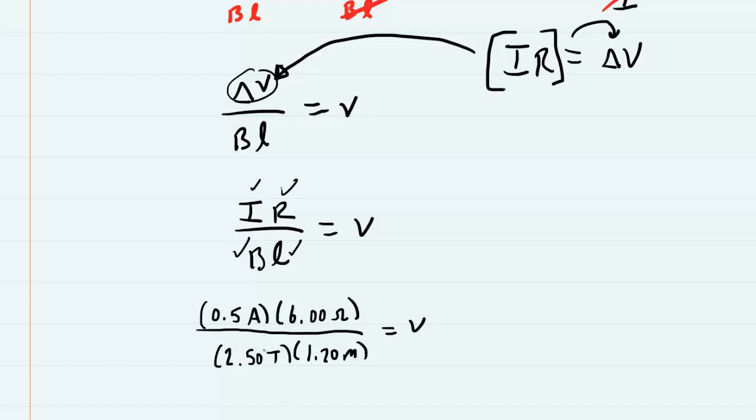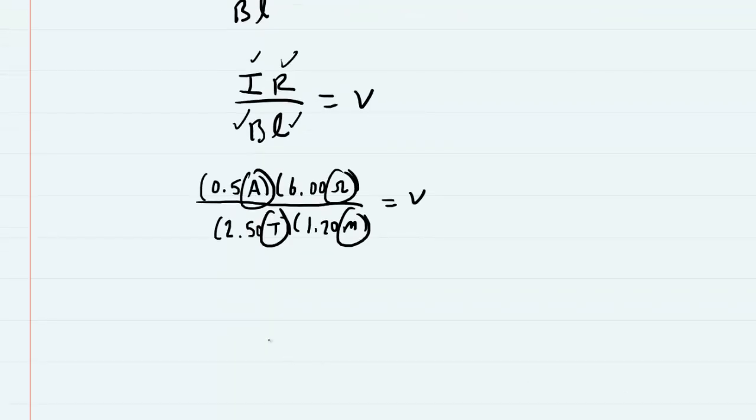So here are the known values plugged in. And luckily the question gives them all in their standard units of amps, ohms, tesla, and meters. When you punch this into your calculator, you get one meter per second. So this will equal the speed of the bar, and the correct answer to the question.